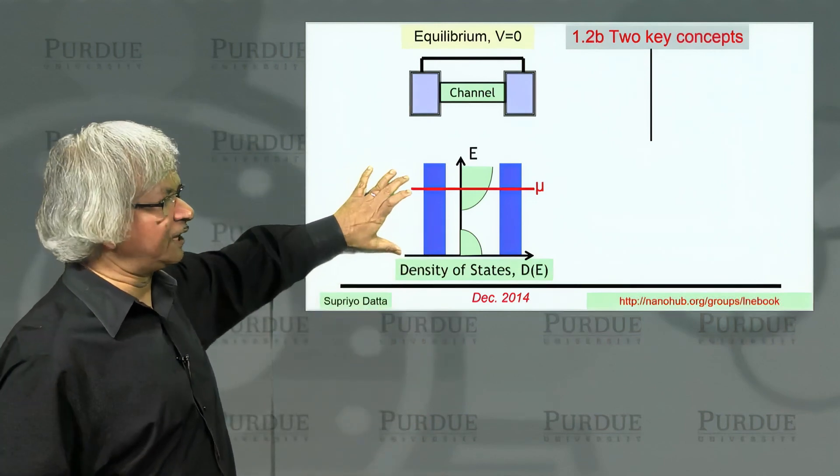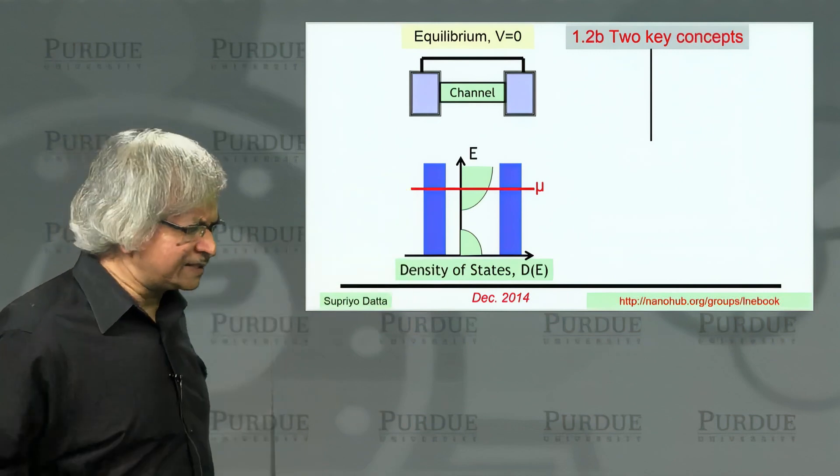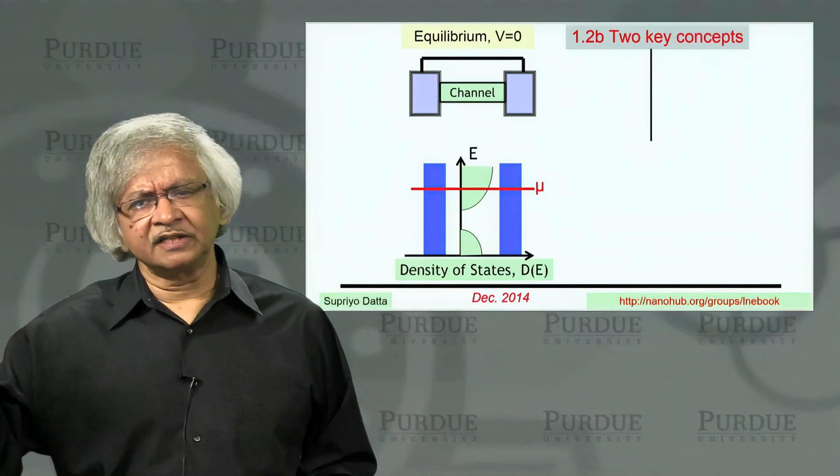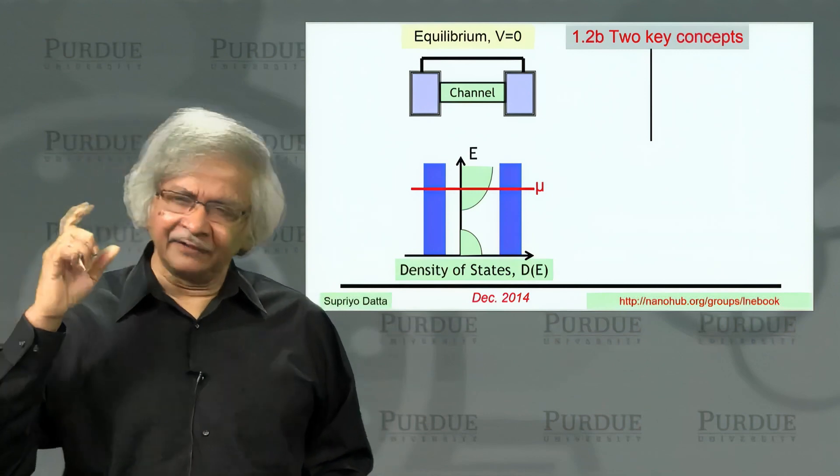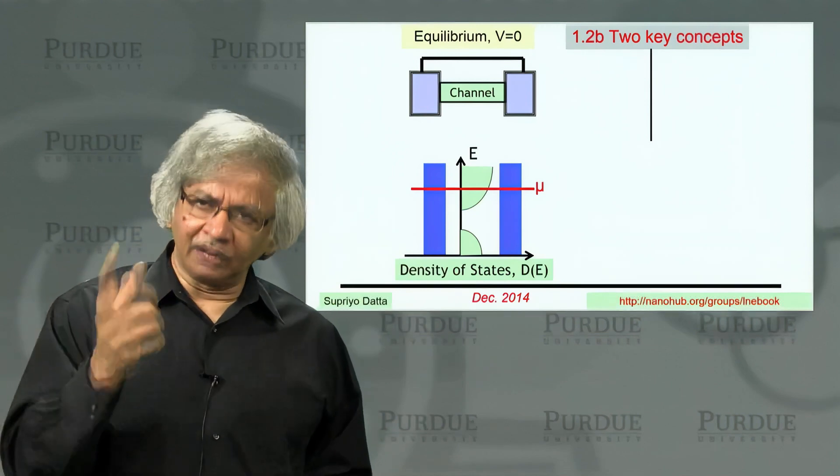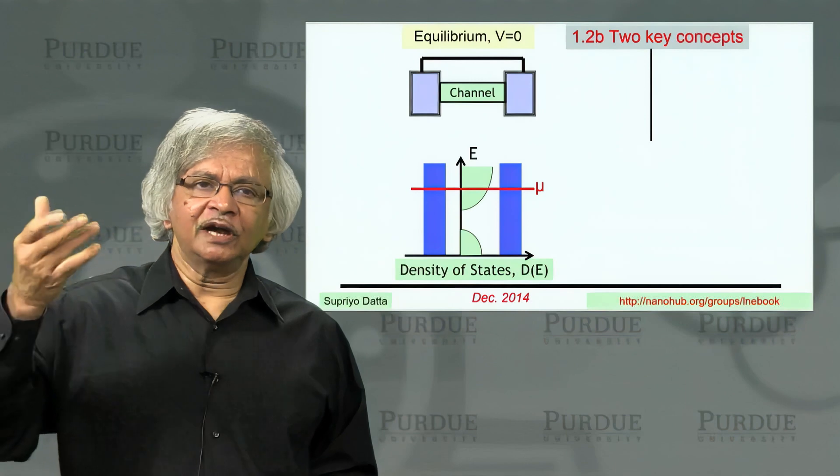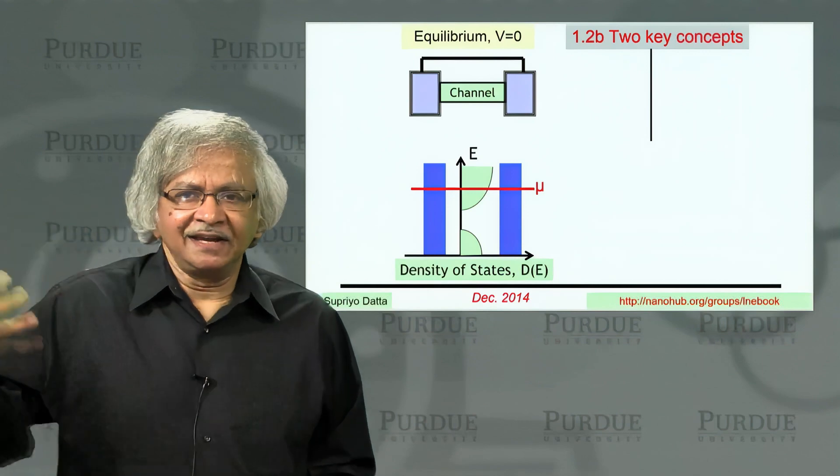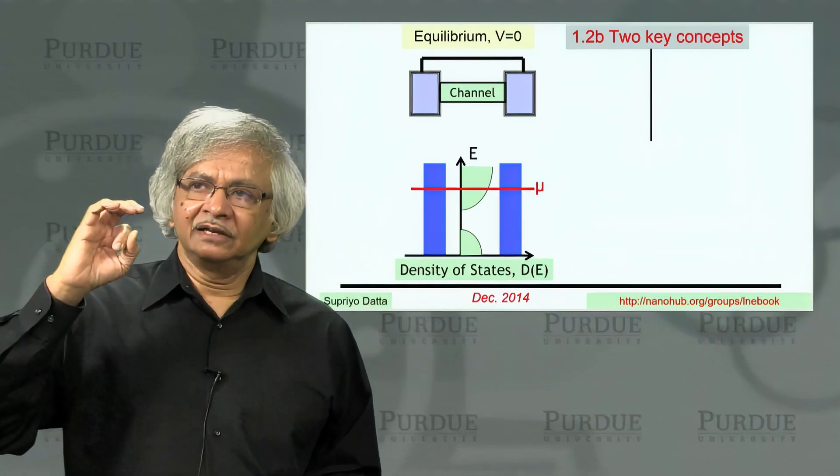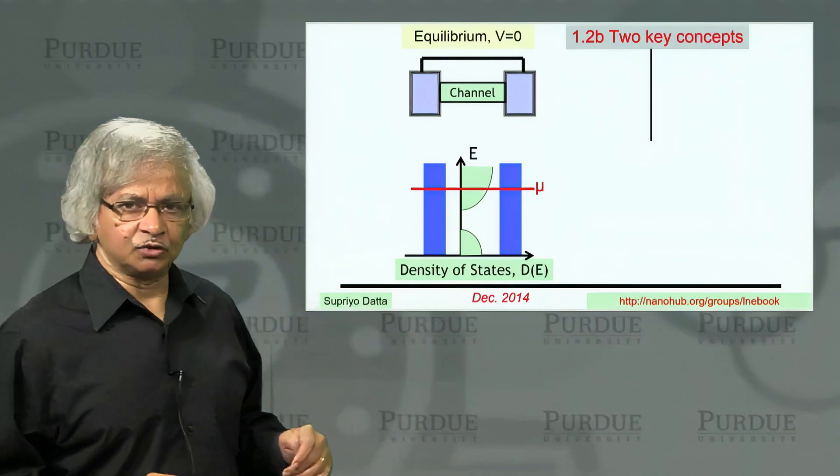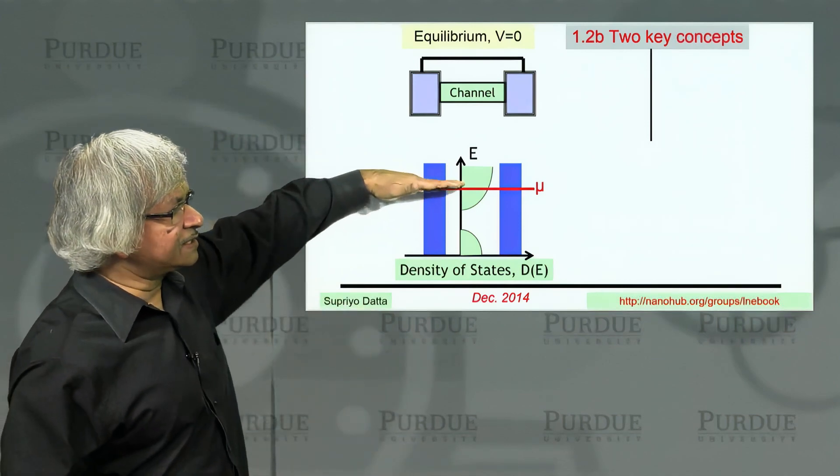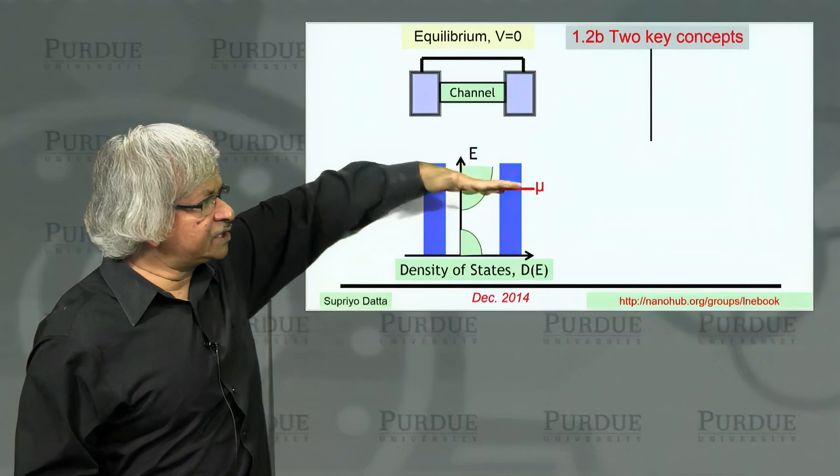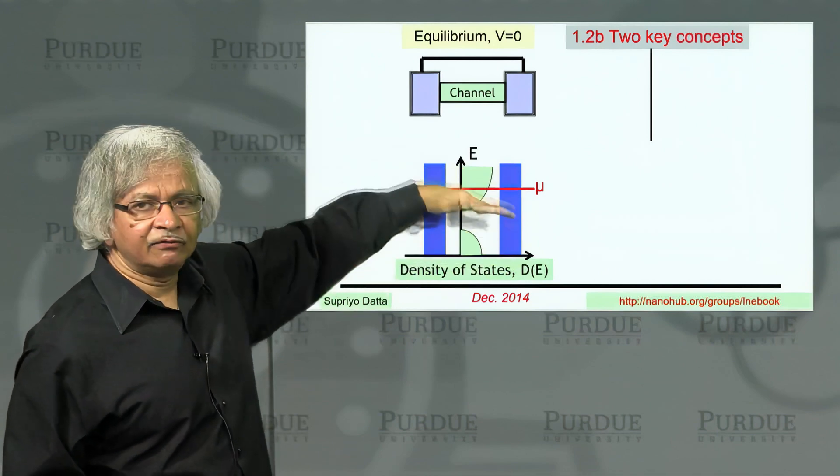One point that sometimes causes confusion is people say, isn't it like every state can hold two electrons, upspin and downspin? Well, the right way to say it is every state only holds one electron. But usually you have two separate states, one for upspins and one for downspins. So it is as if the states come in pairs. But the point is each state holds only one electron. That's the exclusion principle. There is this level which you call the electrochemical potential or the Fermi level, which separates all the filled states from the empty ones.